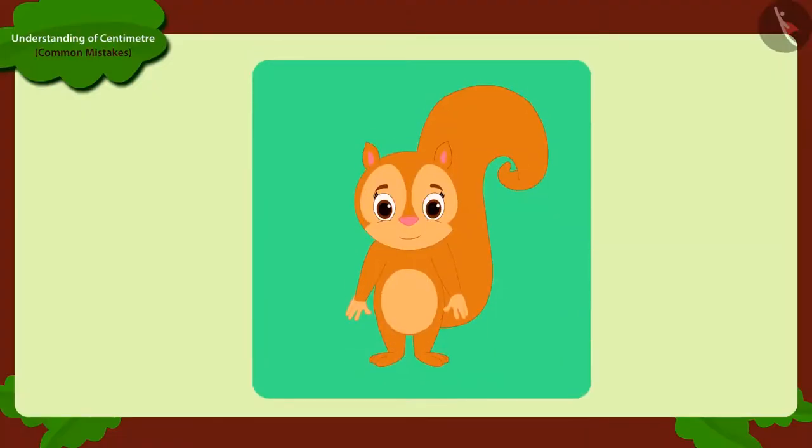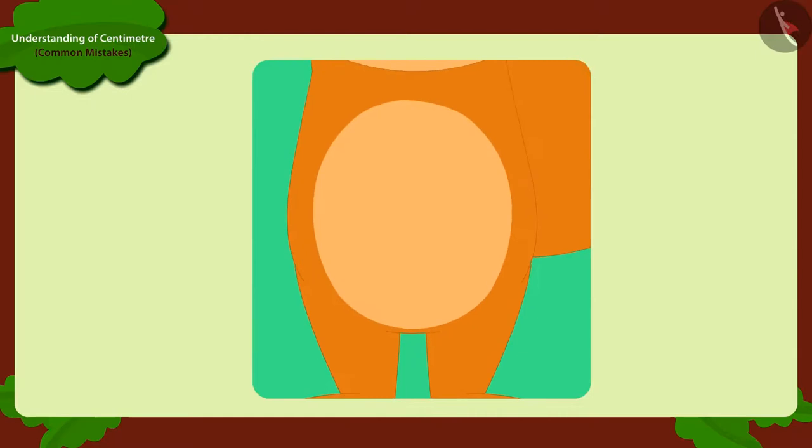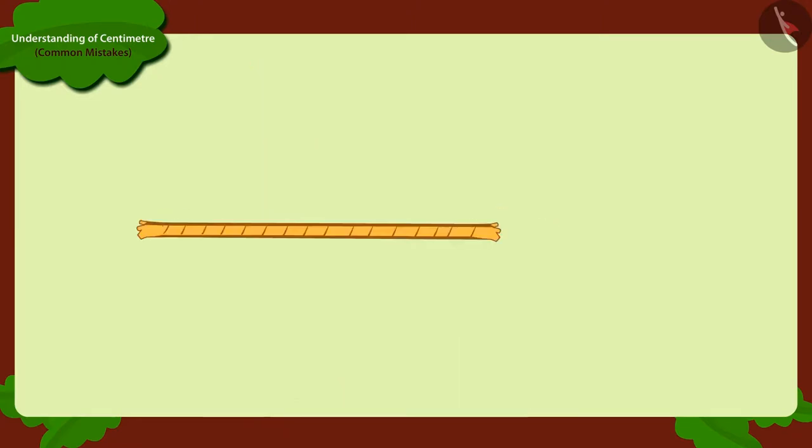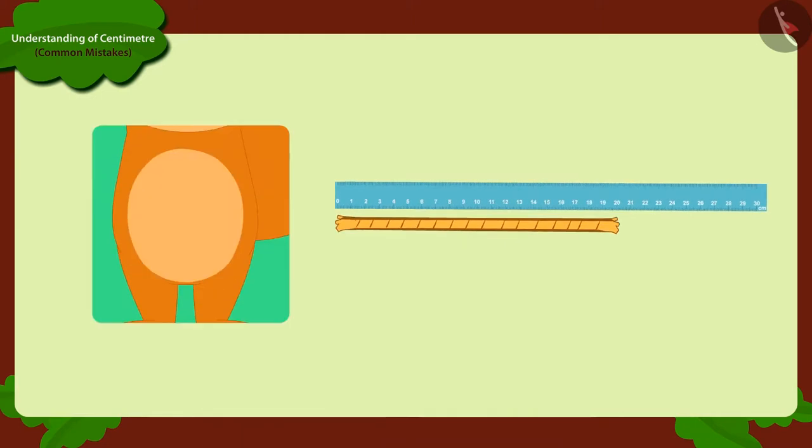Suppose we have to measure the waist of Chanda. So, we will first measure her waist with a rope. Then, we will put that rope next to the ruler. What is the measurement of this rope? It is the right size of the waist of Chanda.